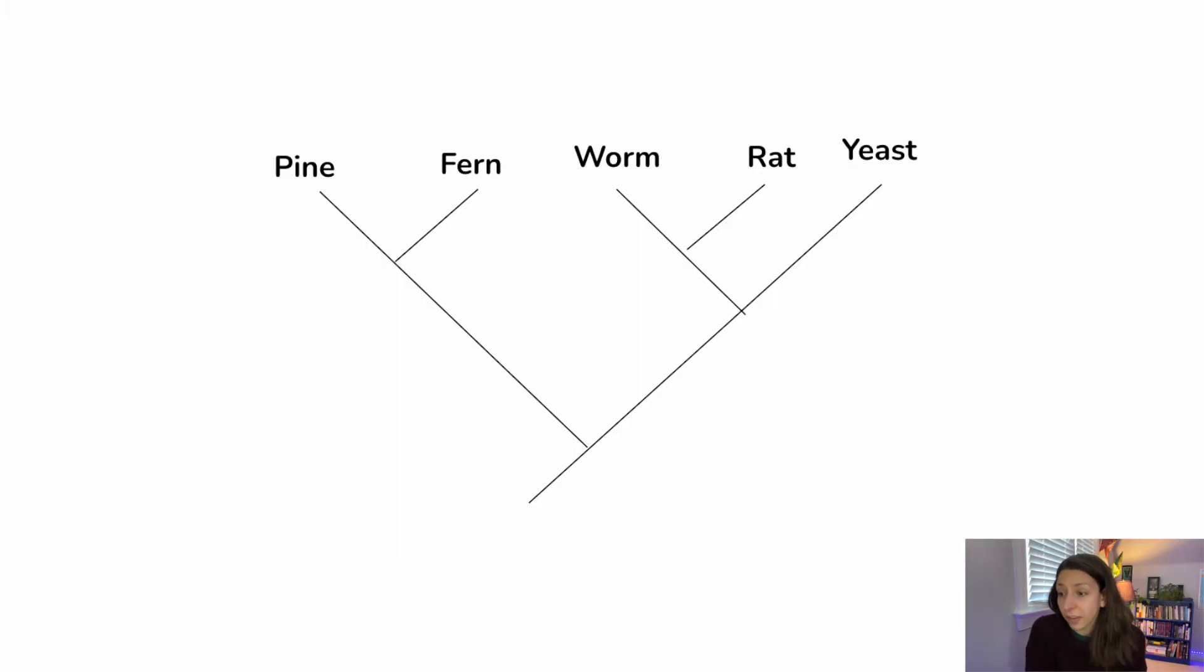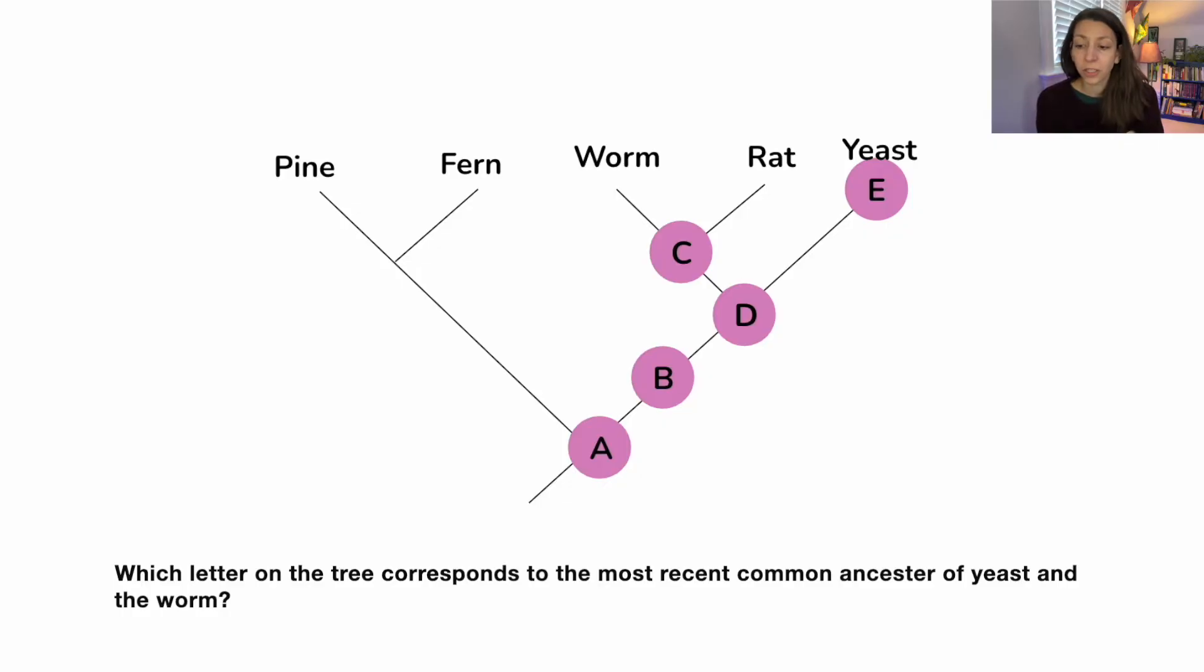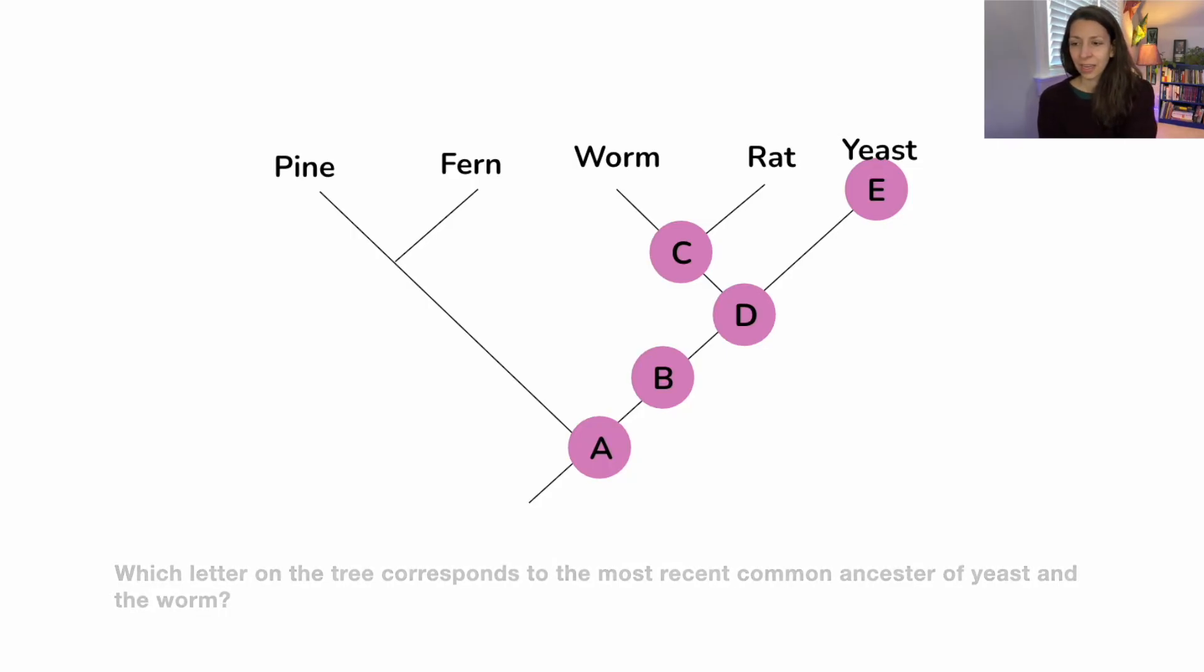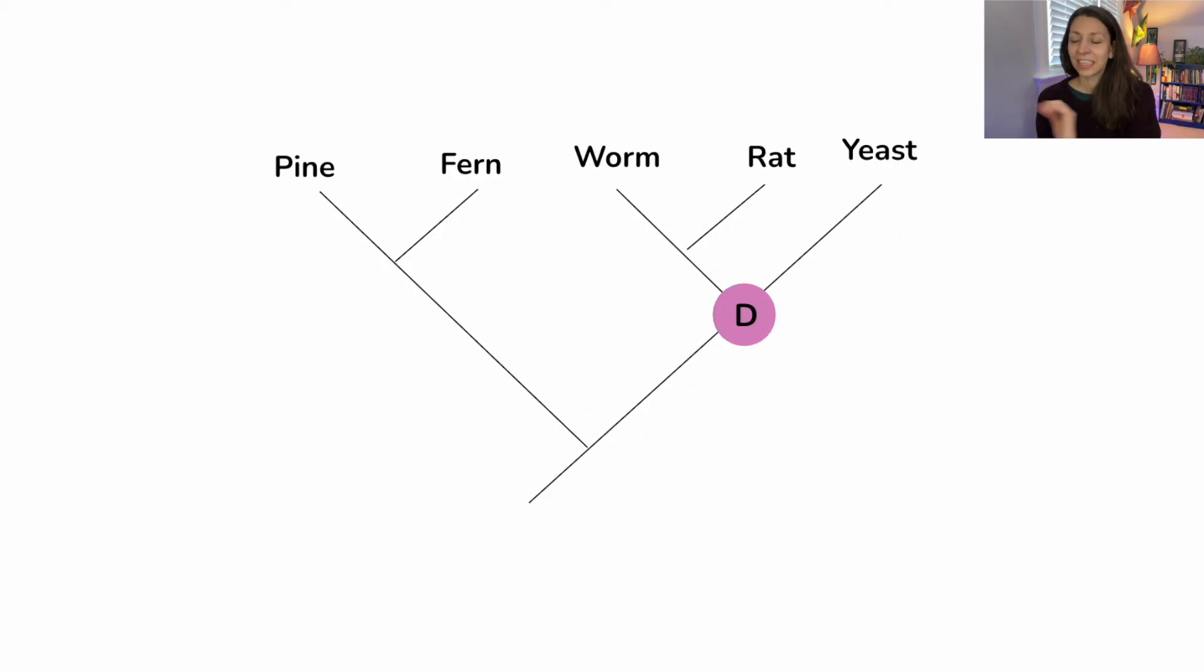Here we have another phylogenetic tree with a variety of different organisms. And what I'm going to do is place some letters on the tree. And so which letter in the tree corresponds to the most recent common ancestor of yeast and the worm? Think about it. The correct answer is D. D would be that branch point where there would be a common ancestor between the worm and the yeast.